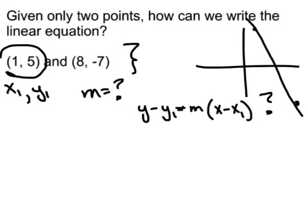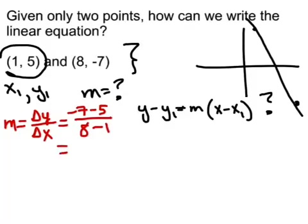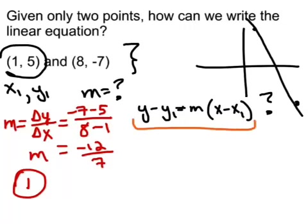We need to know the m. Well, how could we figure that out? We have a formula for that. Slope is change in y over change in x. You need to subtract the y's and subtract the x's. So negative 7 minus 5 all over 8 minus 1 is negative 12 over 7. That's what m is. So that was step 1, was to figure out the slope. So step 2 now is to just plug into our formula we learned today, which is y minus y1 equals m times the quantity x minus x1.